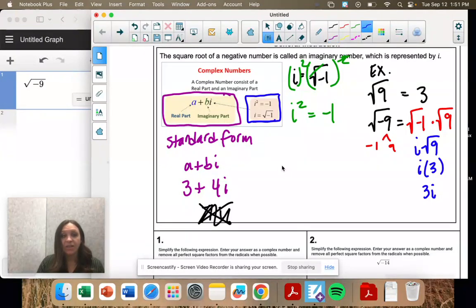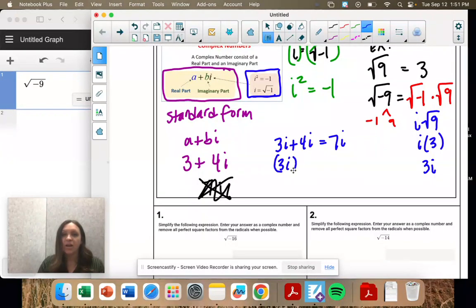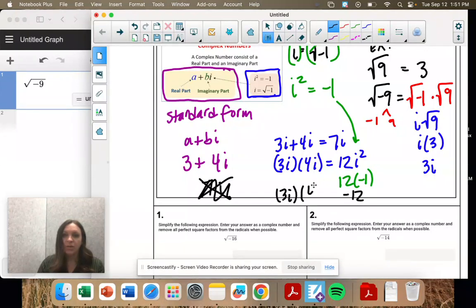I can add them. So if I had 3i plus 4i, that would add to 7i. If I had 3i times 4i, that would be 3 times 4, 12, i times i, i squared. But i squared is negative 1. So I would replace the i squared with negative 1, which changes the sign. That would be negative 12. So 3i times 4i equals negative 12.